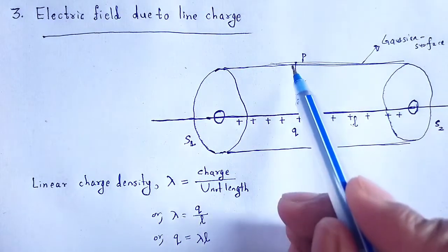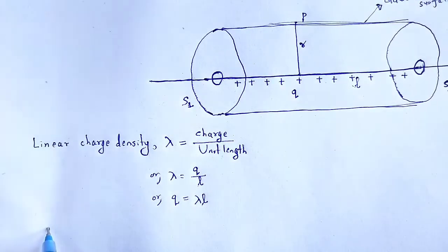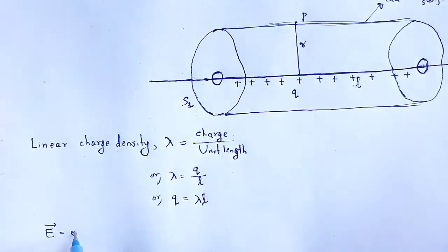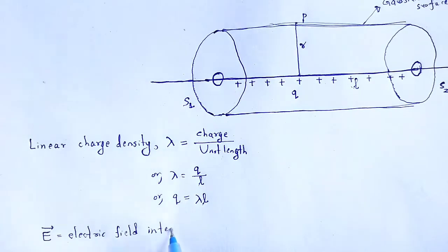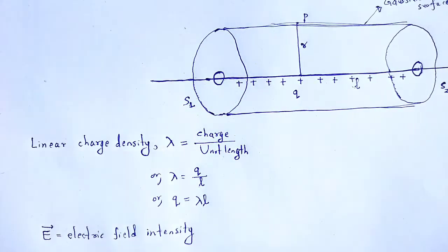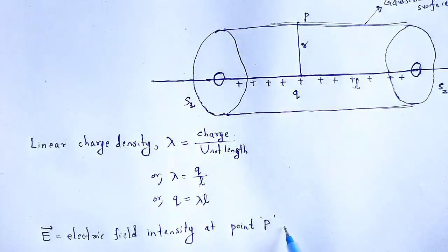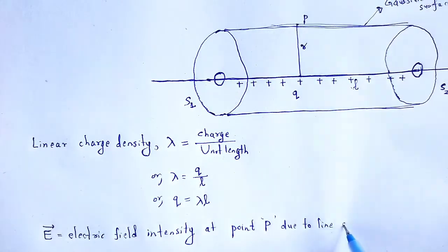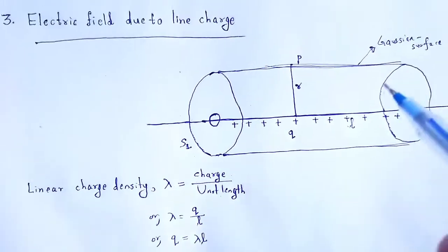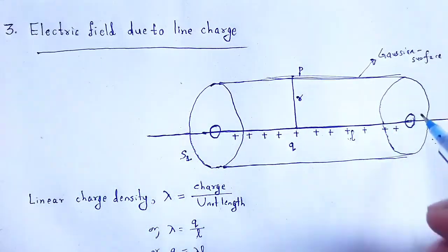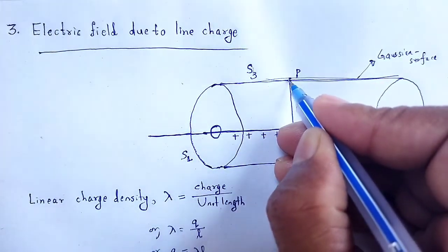Let the electric field intensity at point P due to that line charge be E. We define E as the electric field intensity at point P due to the line charge with linear charge distribution. The two flat circular ends are taken as surface S1 and surface S2, and the curved cylindrical surface is taken as surface S3.